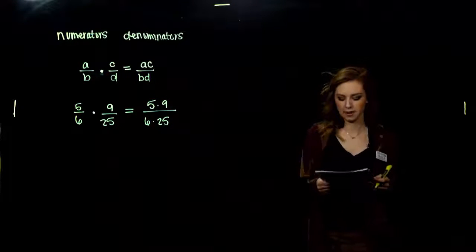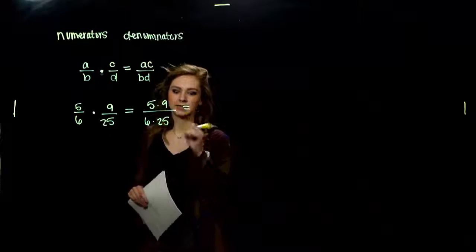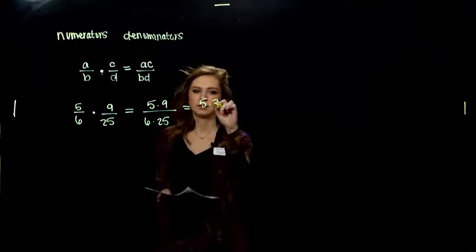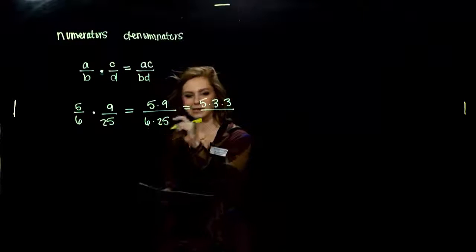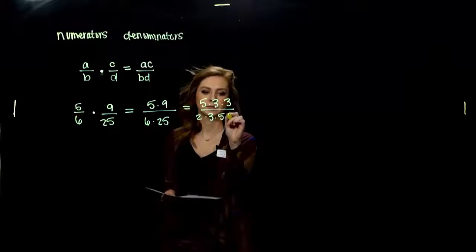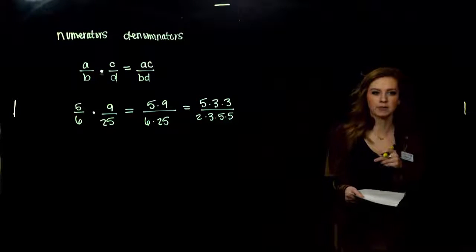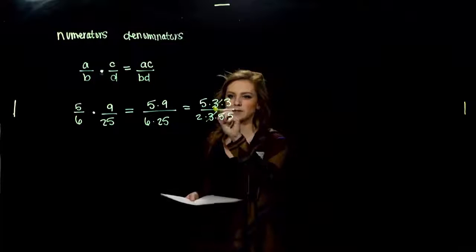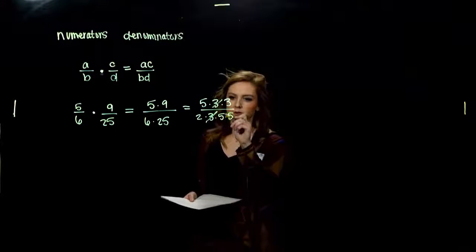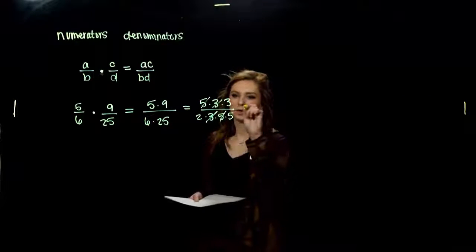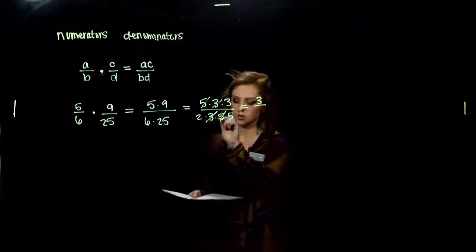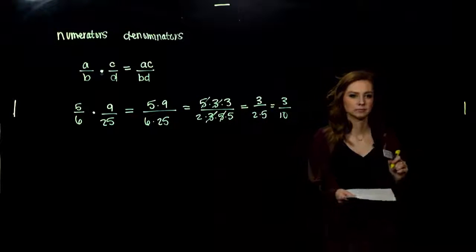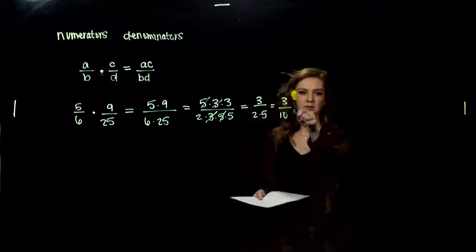We don't have to combine them yet — we can keep them in their factors. Because eventually I want to break it down and cancel common factors. So how can I break up 9? 9 is 3 times 3. 6 is 2 times 3. And 25 is 5 times 5. Same thing divided by the same thing is 1, so the 3s cancel and 5 divided by 5 is 1. I have a 3 in the numerator and 2 times 5 in the denominator, which gives me 3 tenths.